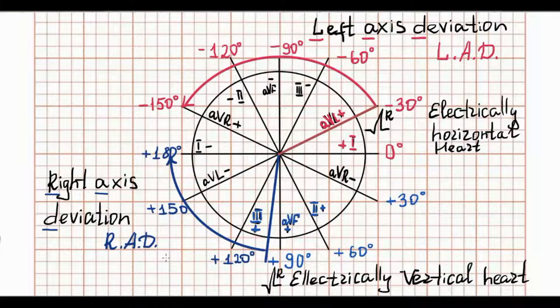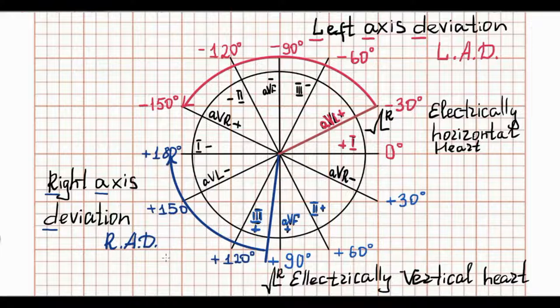In other words, left axis deviation is an abnormal extension of the mean QRS axis found in persons with an electrically horizontal heart. And right axis deviation is an abnormal extension of the mean QRS axis in persons with an electrically vertical heart.